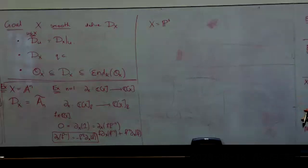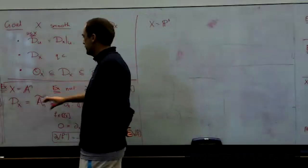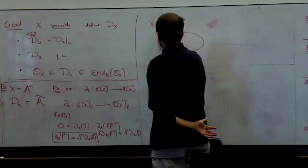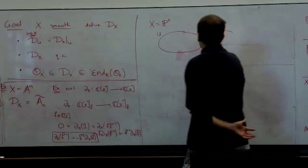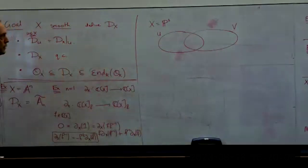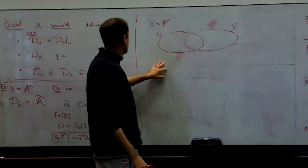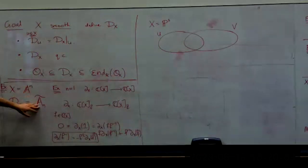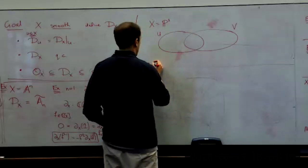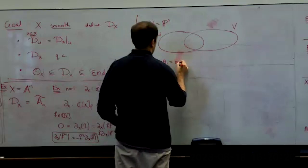So this is one of the things we want to get out of this talk: what happens for P1. On U I have M corresponding to A^1, and on V I have N corresponding to A^1. On U my ring is k[x] and I have the Weyl algebra A_1. On V I have my ring k[w] and again A_1 with coordinate w. This describes what D_X looks like on U and V, and to describe D on P1 I just need to make sure things are compatible on the intersection.